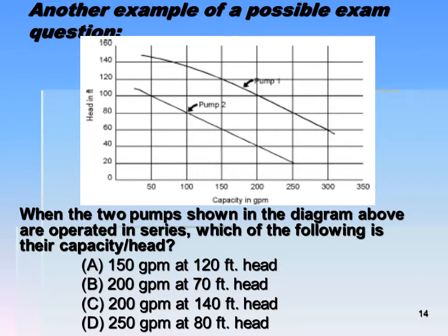So the GPM is going to be the same for series pumps. What are our choices? At 150 GPM, if we add the head of the two pumps, we get 60 and 120, that's 180 — but that's not one of the answer choices. At 250 GPM, we get 20 feet of head from pump 2, and when pump 1 comes on we get 80, so that gives us 100 feet of head. So 250 GPM at 100 feet of head is one option.